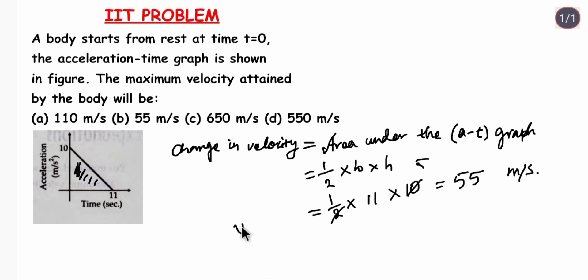So this is the change in velocity that means v2 minus v1. Now it says that the body starts from rest. That means our initial velocity was 0 meter per second.